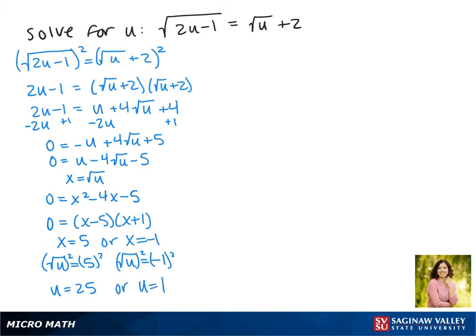Now we have to check and see if either of these solutions are extraneous, so we're going to plug 25 back in. On the left we get the square root of 50 minus 1, on the right we get 5 plus 2. This gives us the square root of 49 equals 7, and this is true. 7 equals 7, so 25 is a solution.